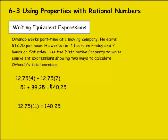So either way, Orlando makes $140.25. To me, I like this method better because it just seems faster. I did 7 plus 4 to find 11 hours and multiplied that times his hourly wage.